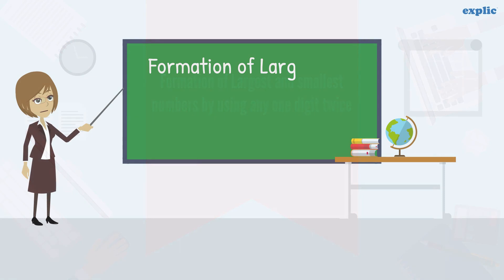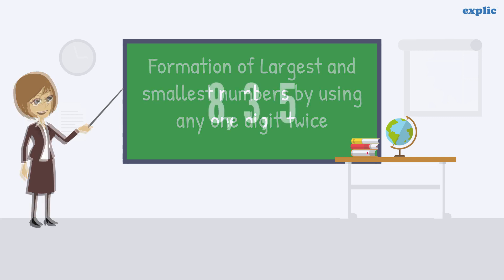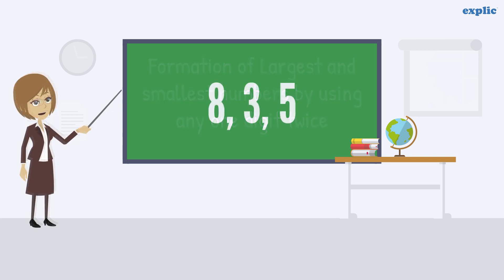Hello class! Let's learn about the formation of largest and smallest numbers by using any one digit twice. Take any three digits, for example, 8, 3 and 5.